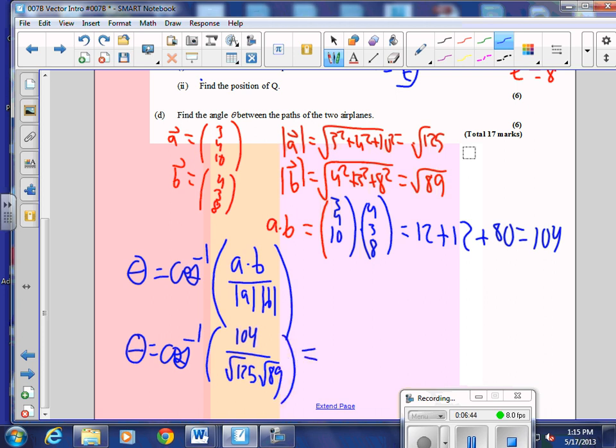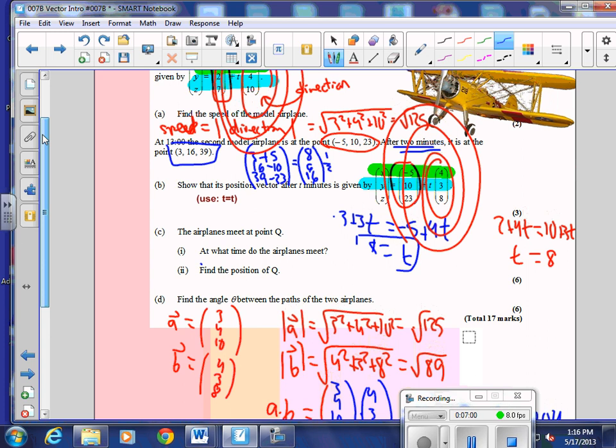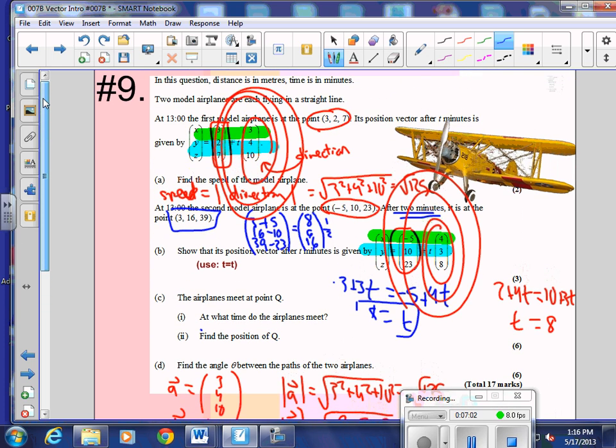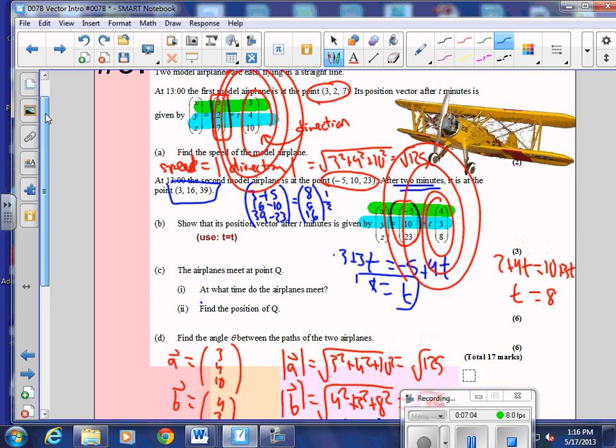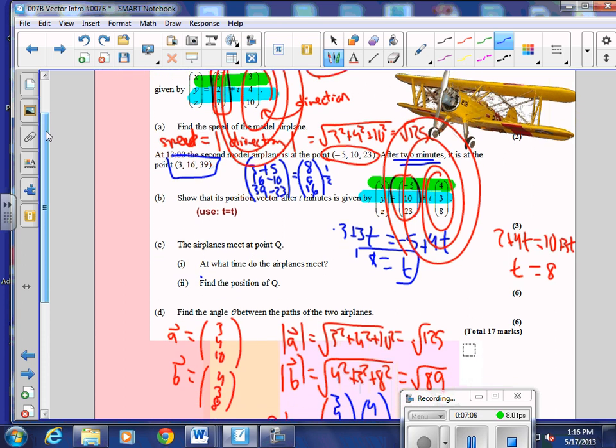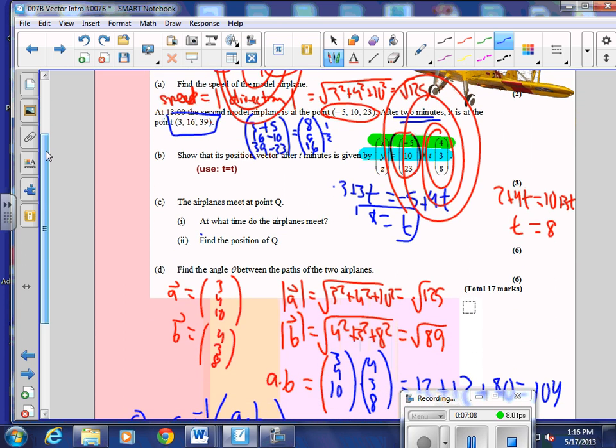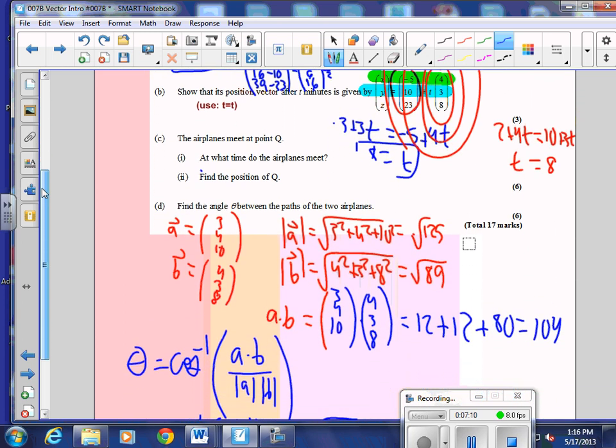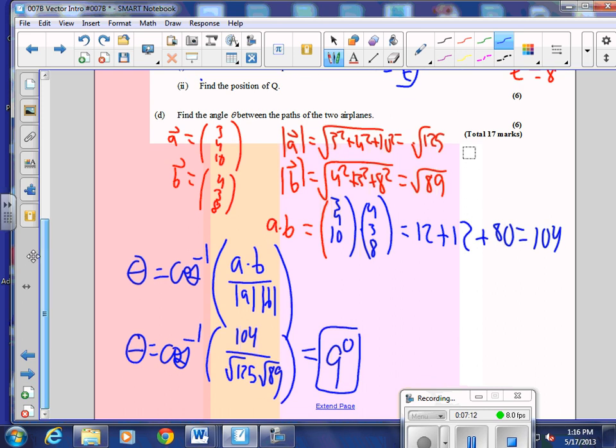Did anybody get that angle through calculators? Go ahead and get that. Nice. 9 degrees and 35 minutes, so we'll just round it to 9 degrees. That's the angle those two planes come to. So the idea of this is that we have two paths, and as you look at the direction, you can find the time where they intersect and the intersection point, you can find the angle which they come together.